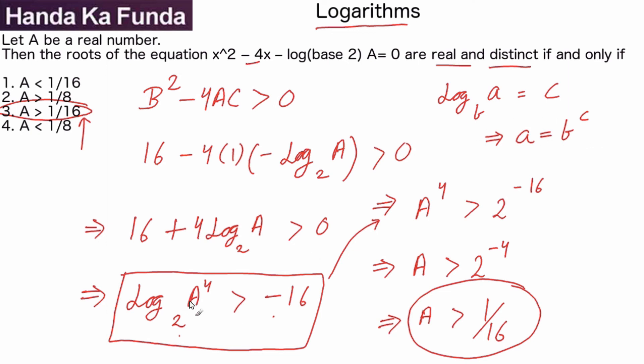What was a? a was A⁴ in this case. What was b? The base here was 2. And what was c which went in the power? c here was -16, which went in the power as -16. Straightforward question, should have been attempted in the exam.